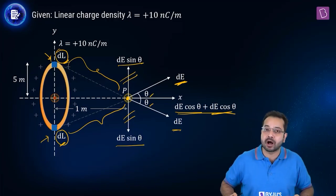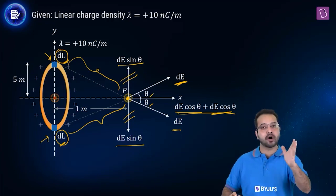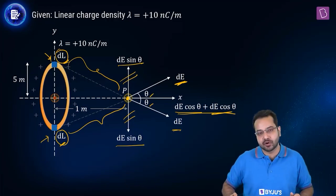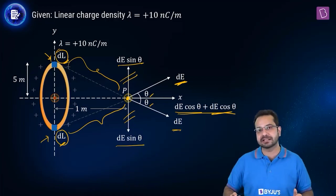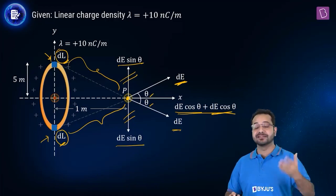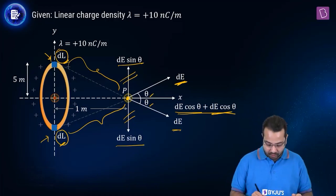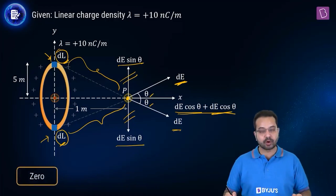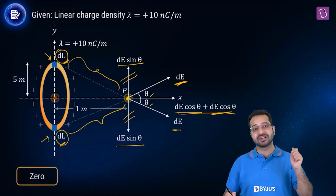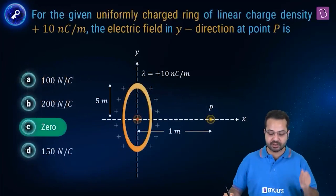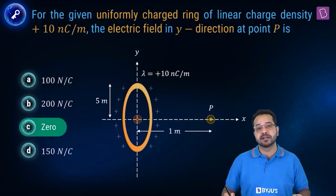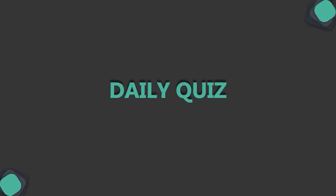Using this symmetry argument for a charged ring, the net electric field is along the axis. Perpendicular to the axis, the electric field is 0. So my answer is 0, and the correct option is option C.